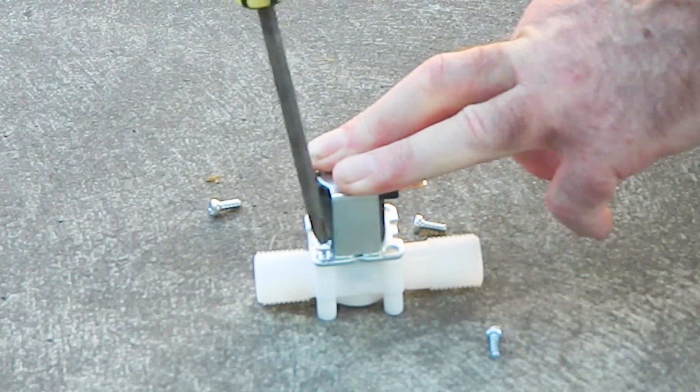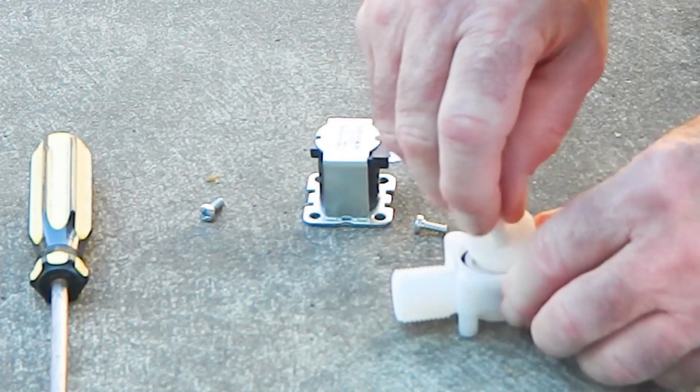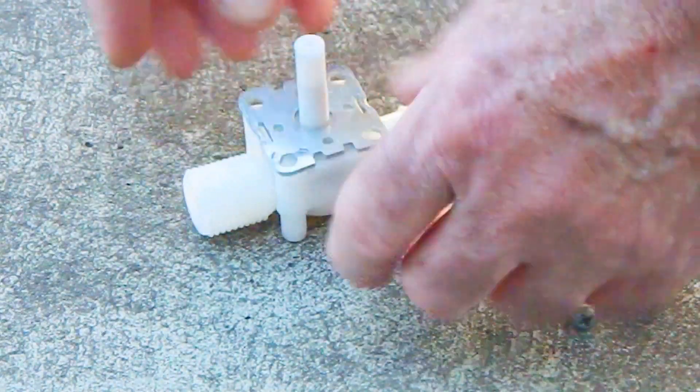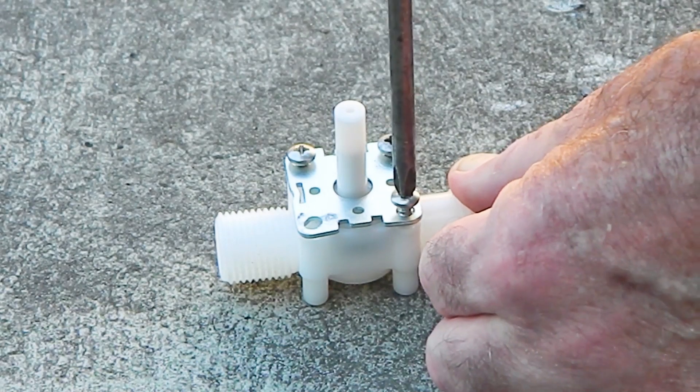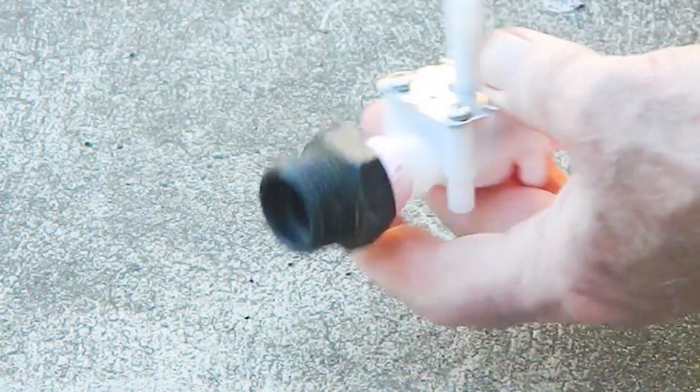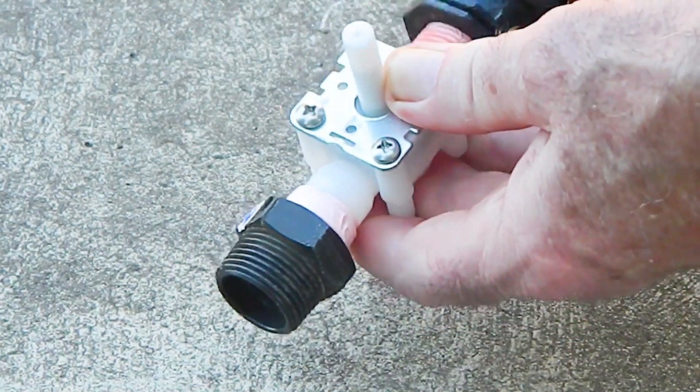Remove the four screws from the solenoid valve and carefully remove the solenoid from the valve. Remove the base plate from the solenoid and reattach the base plate to the valve. Connect the bush to the valve inlet and connect the elbow to the valve outlet.